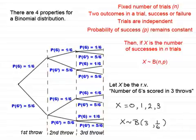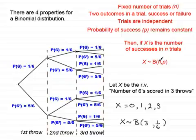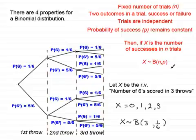In general, if X is the random variable representing the number of successes in n trials, we describe this as X distributed binomially with parameters n and p, where n is the number of trials and p is the probability of success. This brings us to the end of this tutorial. In the next tutorial, I'll show you how to develop this further and do calculations using this model.